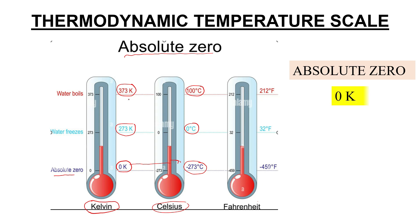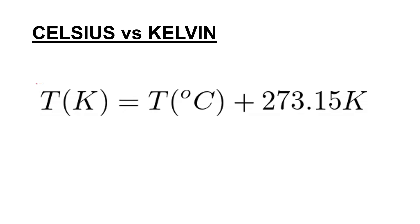At absolute zero — zero Kelvin — the pressure of the gas in a constant volume gas thermometer is zero, and molecular vibration becomes zero. The relationship between Celsius and Kelvin scales is: T(K) = T(°C) + 273.15 Kelvin.